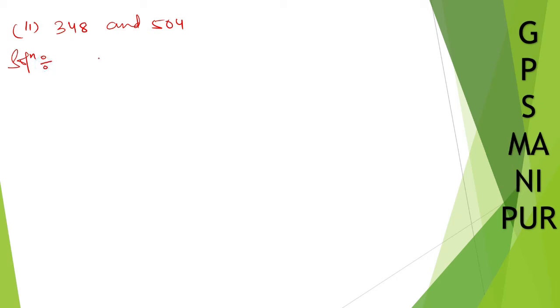So here, take the smaller number, 348, and divide to the bigger number, 504. I am using the division method. If you want, you can use another method also. The method which is given even in your example, you can use that.